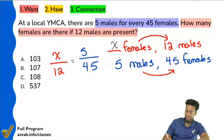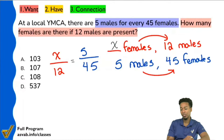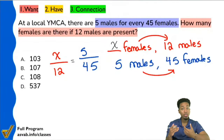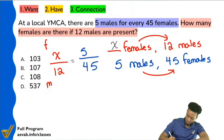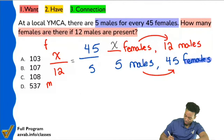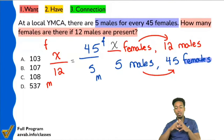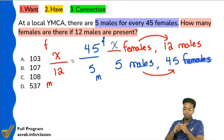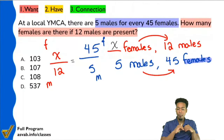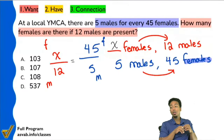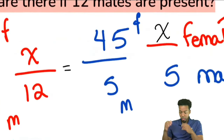Notice here it says females then males; here it says males then females. Does order matter when writing proportions? 100% — absolutely does matter. So to do it the right way: X is for females, 12 is males. I need to write 45 up top because that is females, and males in the denominator. So the correct setup is X over 12 equals 45 over 5. There is a long way of doing this — cross multiplication and division — and there is a short way.